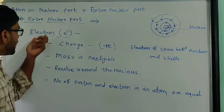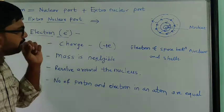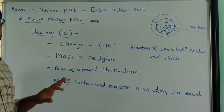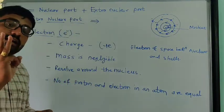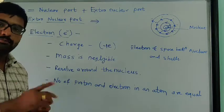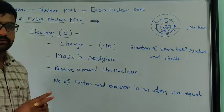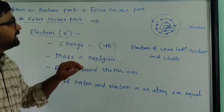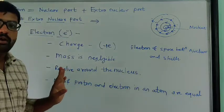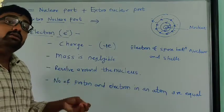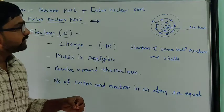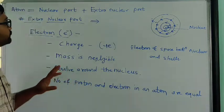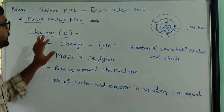Electron is the main constituent of the extra nuclear part. We know the atom is made up of three elementary particles: proton, neutron, and electron. Proton and neutron are present inside the nucleus, so only the electron remains, and those electrons are revolving around the nucleus in particular shells. So we have to study the electron.